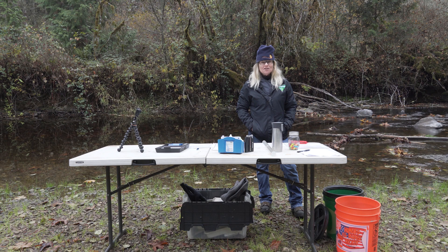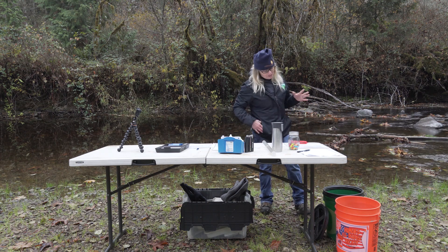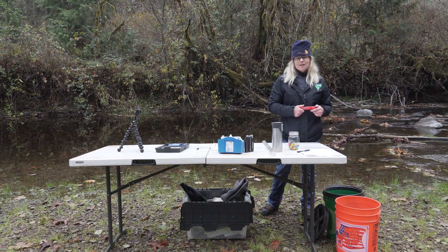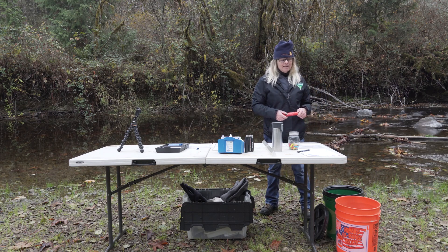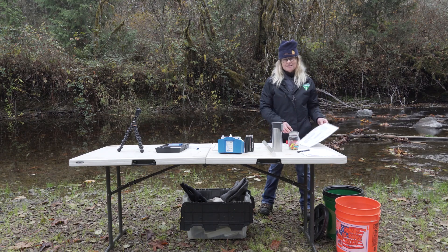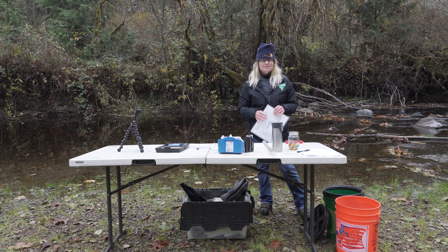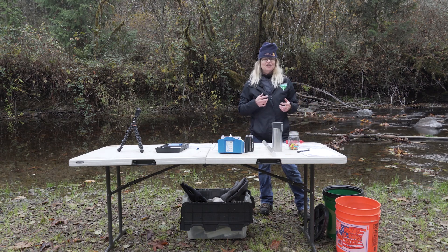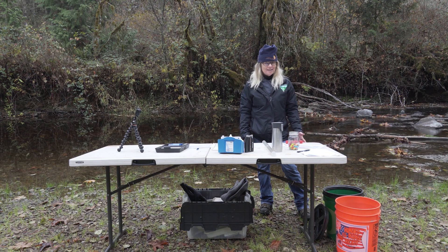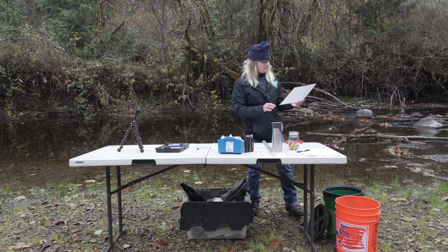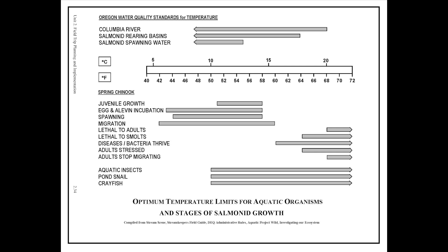The first one I'm going to start off with is temperature, which is a physical characteristic. Temperature measures the heat of something, and we want to talk about why temperature is important to salmon. When you get hot, what do you do? You take off your coat or your hat, go into an air-conditioned room, or eat a popsicle. Well, fish can't really do that. We can change our environment, but fish really can't. So for salmon, when they're spawning, we're looking at 44 degrees Fahrenheit to 58 degrees Fahrenheit — that's ideal for spawning salmon.